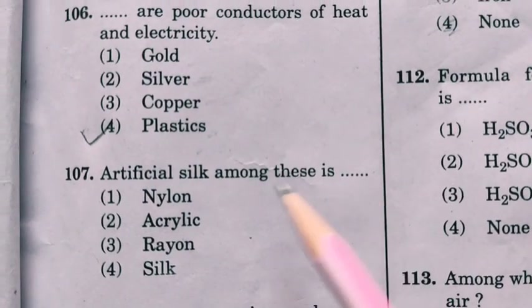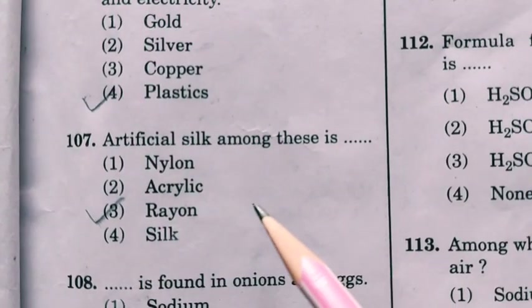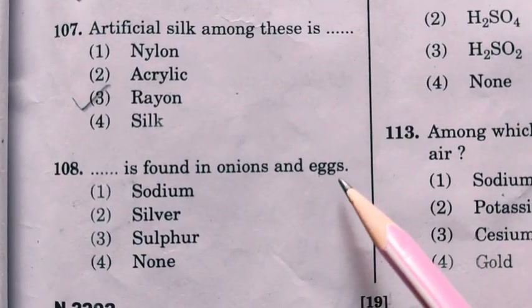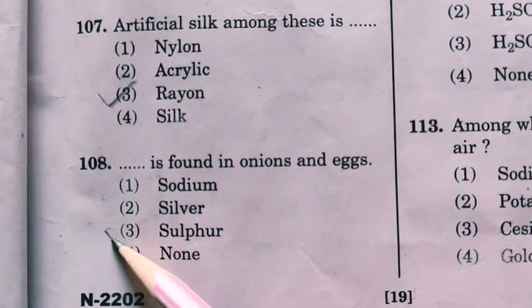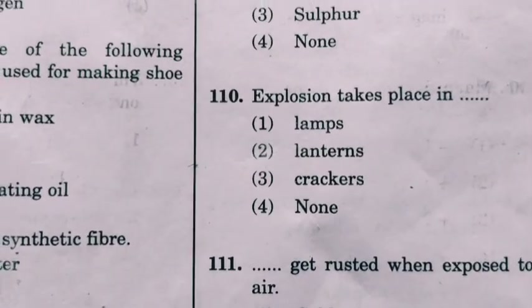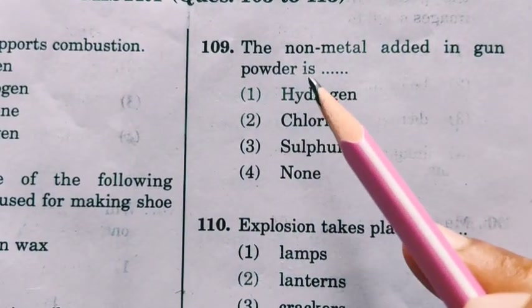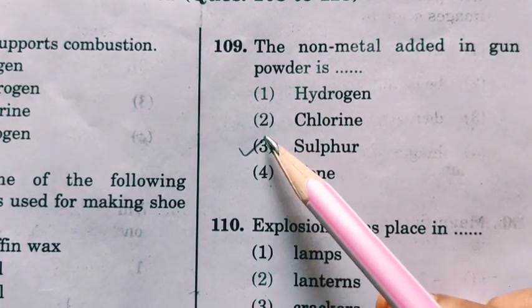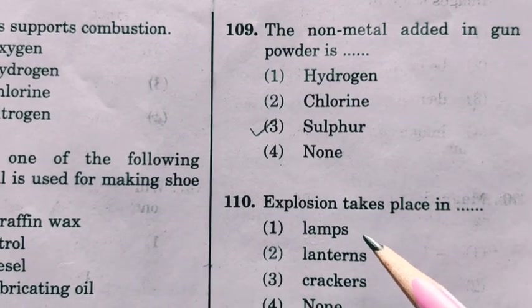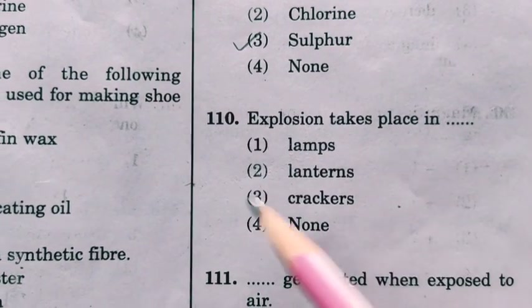Artificial silk: rayon is called artificial silk. Next: what is found in onions and eggs? Sulfur is present in onions and eggs. Next: the non-metal added in gunpowder is sulfur. Sulfur is also present in crackers and fireworks, where explosion takes place.